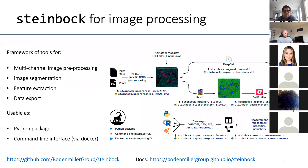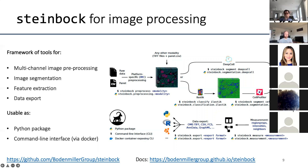Imaging mass cytometry doesn't come in standard TIFF format, so one of the first steps is to preprocess it into TIFF. Steinbock also uses a panel file in which you can specify the channel names — in our case the metals or fluorophores used for measuring — and specify which channels to use for image segmentation. Once TIFF files are generated, there are two ways of segmenting these images for single-cell segmentation.